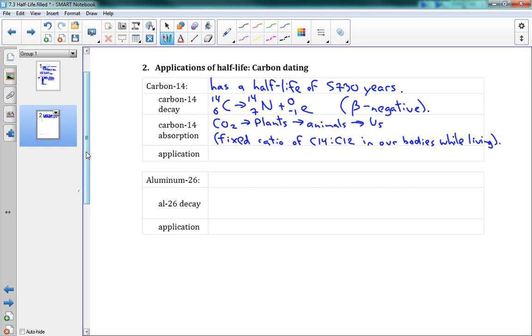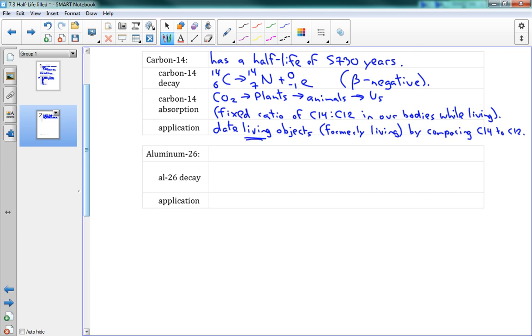So the application here is that we can date formerly living objects by comparing the amount of C-14 to the amount of carbon-12. And that lets them date when something must have been around, when it was living. So it's only useful for dating living things, things that were once living.